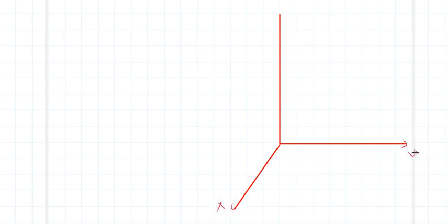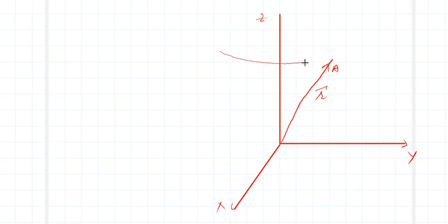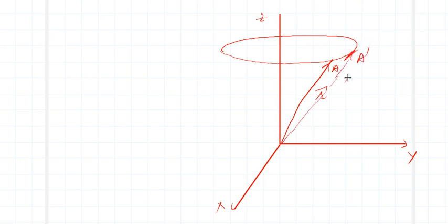Let us proceed as follows. Consider a coordinate axis: x-axis, y-axis, and z-axis. Suppose we have a vector r, represented by point A, with position vector r. Say it is rotated about the z-axis — it was represented like this, and at some time this point will be at a new position, which we call r'.